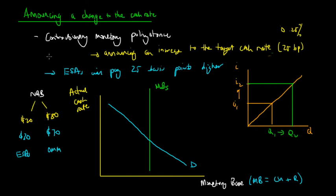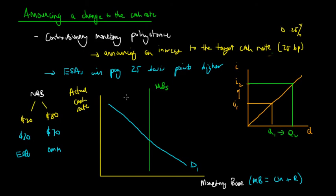Now that the RBA has announced a higher target overnight money market rate, banks also wish to lend more in the overnight money market and hold less in exchange settlement account deposits. What this means is that the demand for cash in the overnight money market has actually increased, because these banks have deposited more in their ESA accounts, meaning they have less to lend. Those banks wishing to borrow in the overnight money market will demand money at a higher cost, demanding a higher level of interest at every level of money supply.